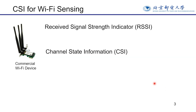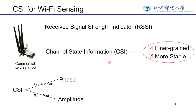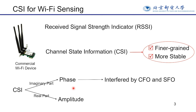Researchers extract RSSI or CSI from commercial Wi-Fi devices for sensing. Since Wi-Fi CSI contains finer granularity and more stable channel information, it is commonly used in existing Wi-Fi sensing applications. The complex wireless CSI contains amplitude and phase information. CSI phase is often interfered by hardware disturbances such as SFO and CFO, while the amplitude of CSI is the generally reliable and accessible metric for activity extraction and classification.